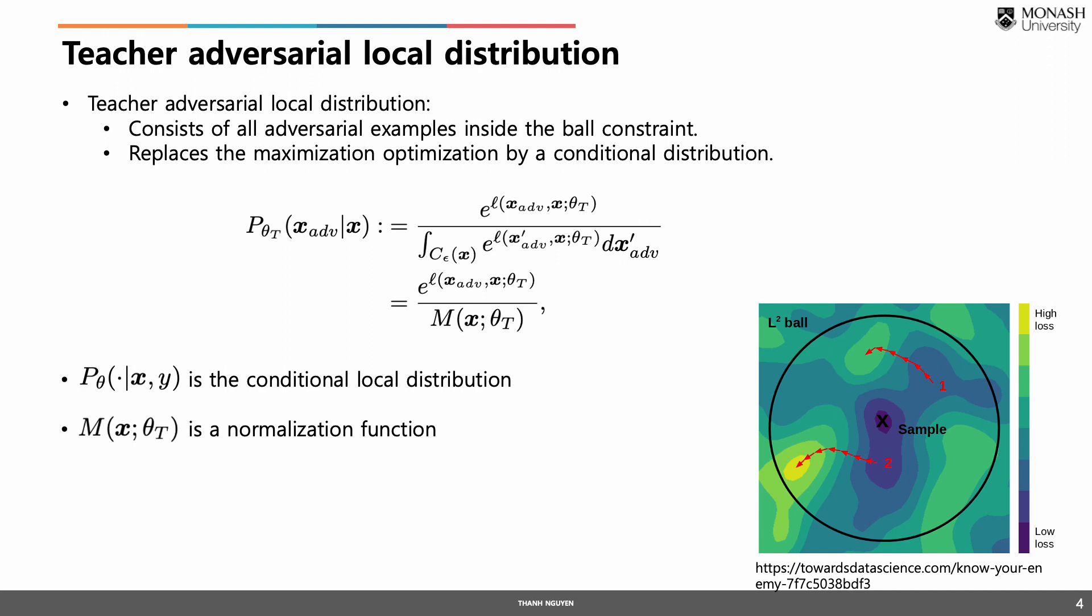We replace the maximization optimization from adversarial attack with our teacher adversarial local distribution, which consists of all adversarial examples inside the constraint, as you can see in the equation below.